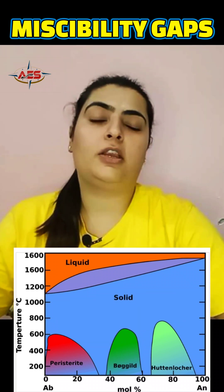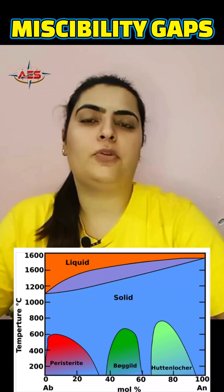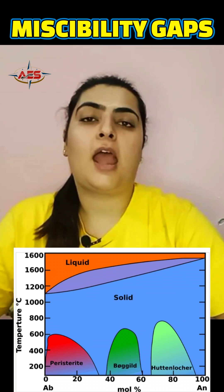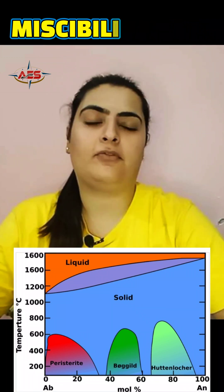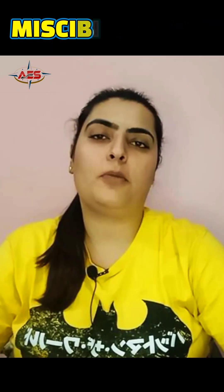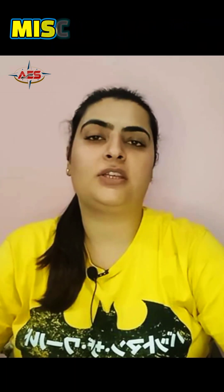The Huttenlocher intergrowth is seen in the mineral bytownite, and the composition ranges from albite 55 to albite 95. This was all about miscibility gaps seen in the plagioclase minerals.